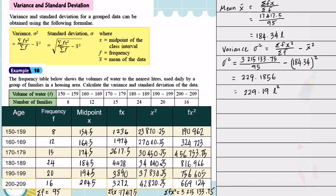Now we want to find the standard deviation. Applying the square root to the variance gives the standard deviation. You will obtain a standard deviation value of 15.1389, which rounded to 2 decimal places is 15.14 liters.